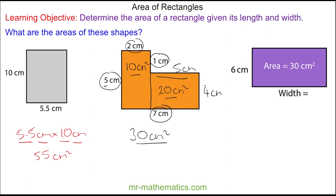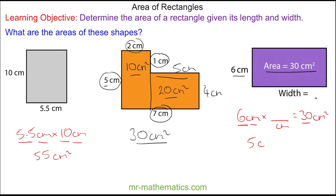For our final question, we know the area of this purple rectangle is 30 centimeters squared and the length is 6. Do you want to try and work out the width? You can pause the video and resume it when you're ready. So we know 6 centimeters multiplied by the width will make 30 centimeters squared. 6 times 5 makes 30, and centimeters multiplied by centimeters makes centimeters squared. So the width is 5 centimeters.